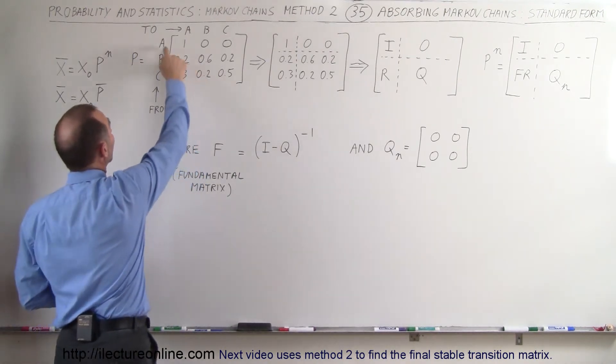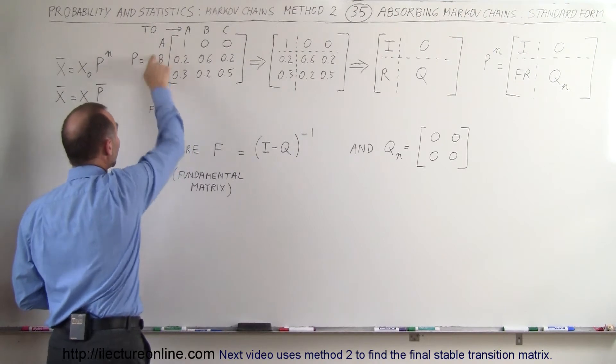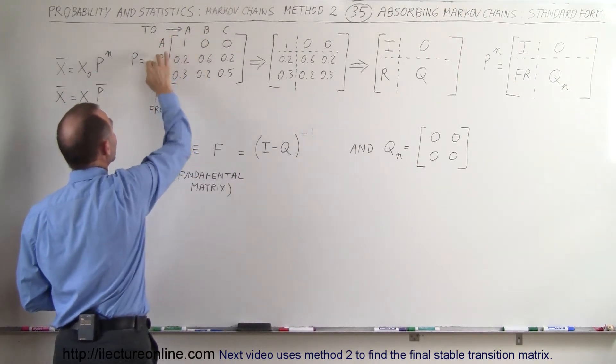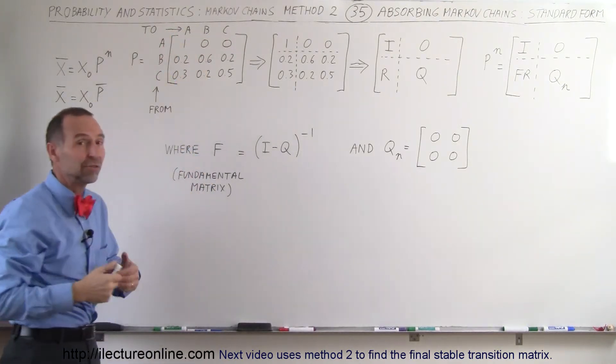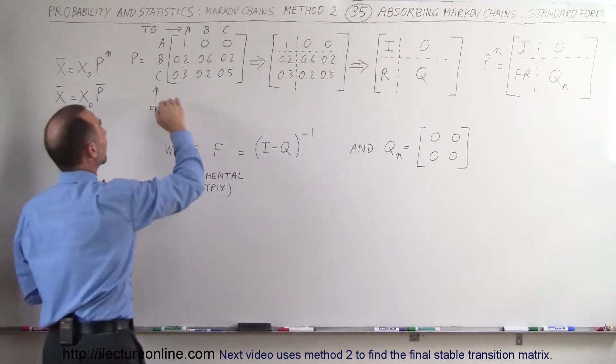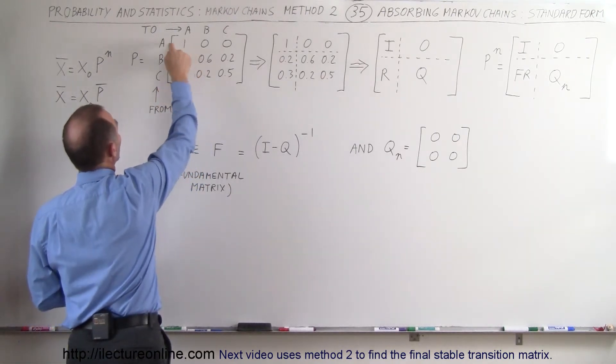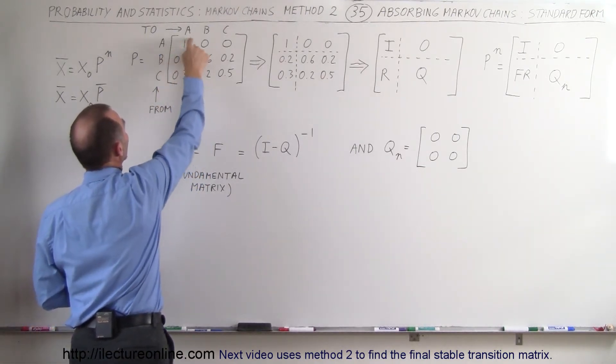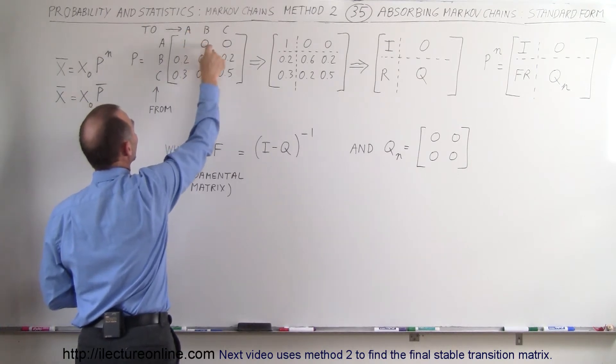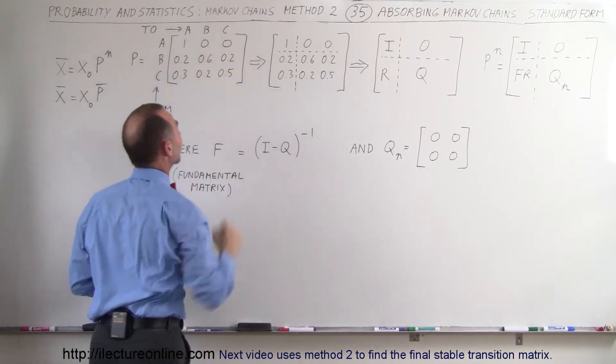That happens, for example, when we have the from states and the to states. We have A, B, C. Those could be representative stores A, B, and C. We can see that when a customer goes to A, 100% of all the customers remain at A, and 0% of the customers will go to B and C.